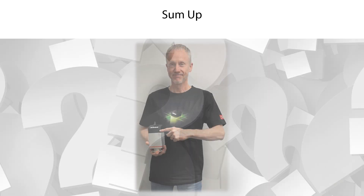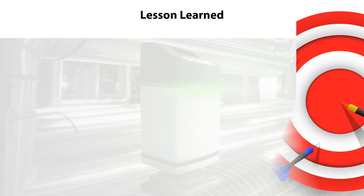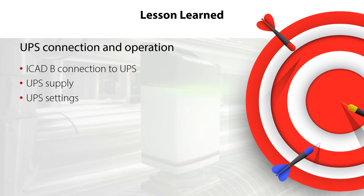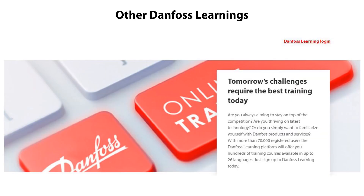You have now seen demonstrated how to configure the UPS emergency opening degree in the ICAD-B. This will efficiently support you in doing a correct UPS setup and ensure correct and safe system operation. You have now completed this Danfoss ICAD-B setup and configuration video about how to operate the UPS with the ICAD-B. You now know how to connect the ICAD-B to the UPS, configure the UPS supply, configure the UPS settings, configure the UPS emergency state, and configure the UPS emergency opening degree — all ensuring a correct and safe system operation. Please check out the other online ICAD-B setup and configuration videos. Thanks for watching!